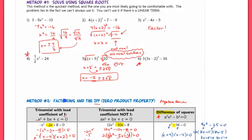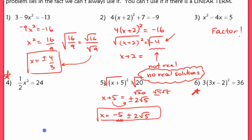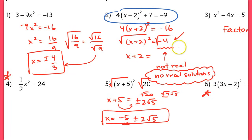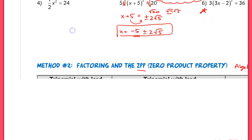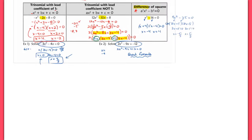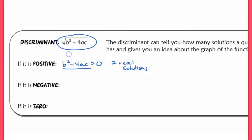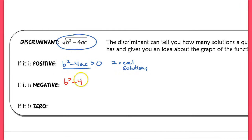The only one that would not give a positive discriminant was problem 2, which had no real solutions because we had a negative radical. If b squared minus 4ac is less than zero — if it is a negative — we have no real solutions, because you can't take the square root of a negative number.